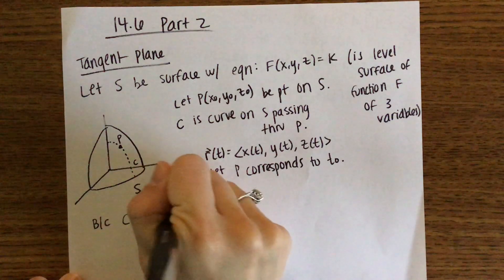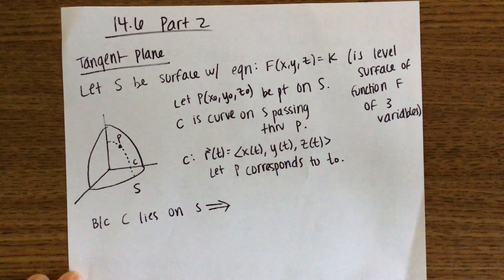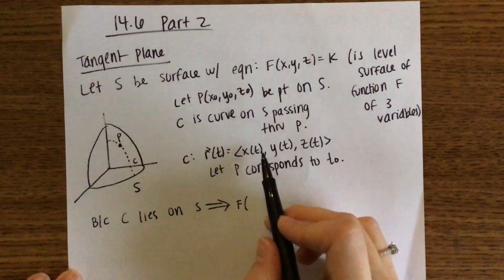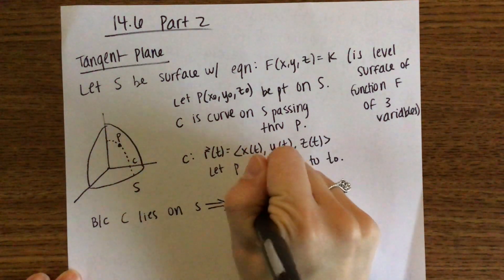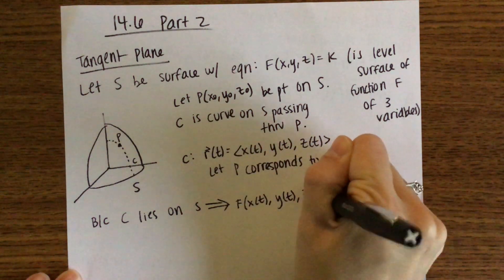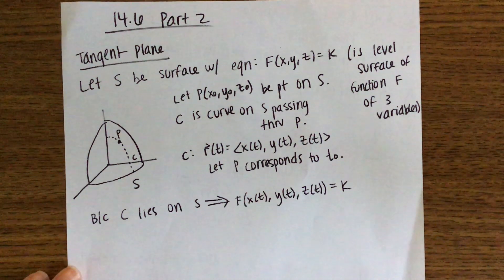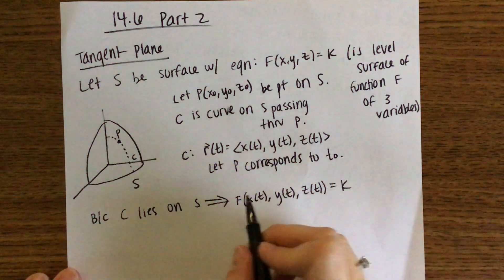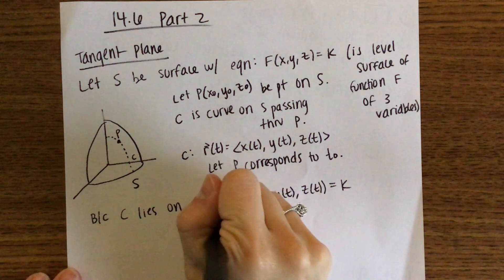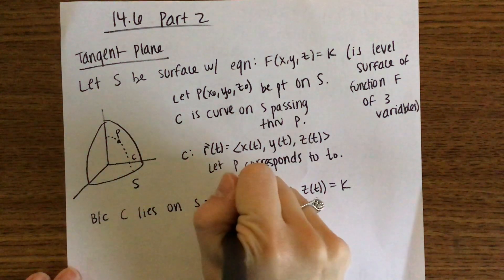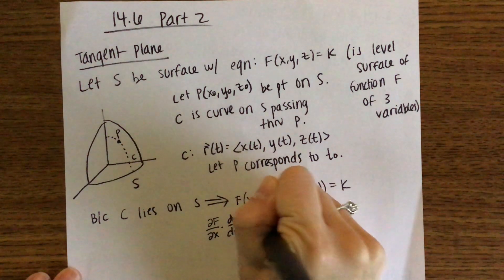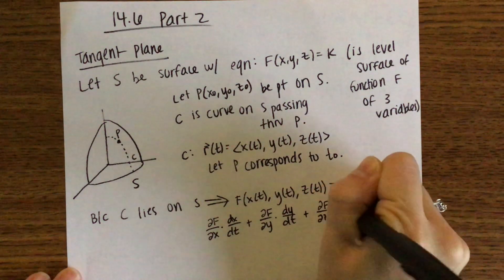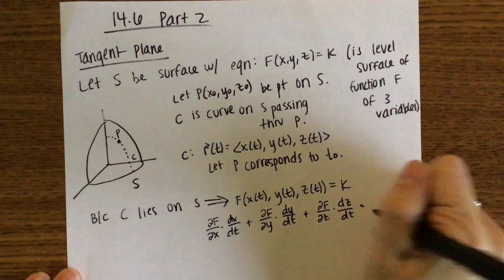Because C lies on surface S, x, y, and z are functions of T, so we have F of x(T), y(T), z(T) equals some value K. Differentiating with respect to T, the left side gives the partial of F with respect to x times dx/dt, plus the partial of F with respect to y times dy/dt. Differentiating the constant K with respect to T gives zero.